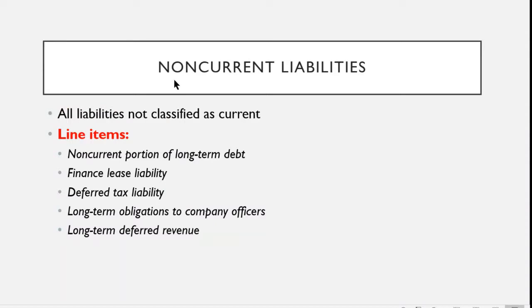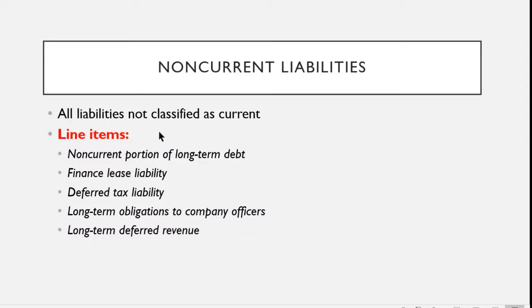The same with non-current assets: all other liabilities which are not part of the current liabilities will fall under non-current liabilities. The main line items include non-current portion of long-term debt, finance lease liability, deferred tax liability, long-term obligations to company officers, and long-term deferred revenue. All of these items you will get to know in the intermediate accounting subject.